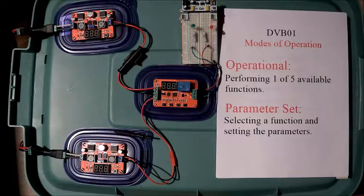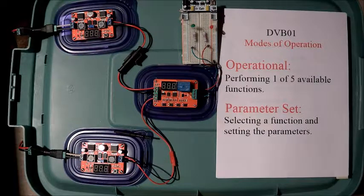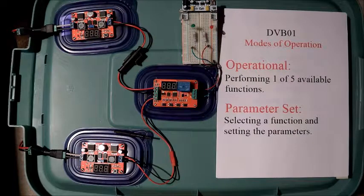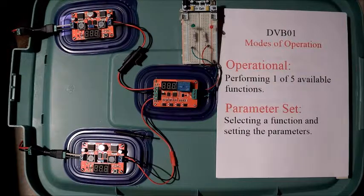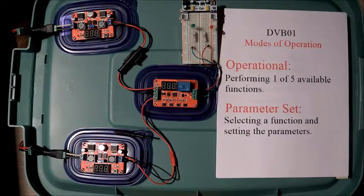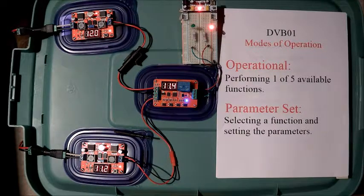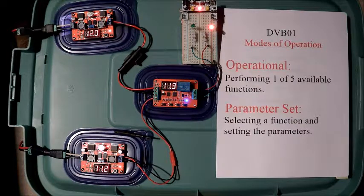The DVB-01, a multifunction voltage monitoring controller. The DVB-01 has two modes of operation. The first, operational mode. The second, parameter set mode. When you apply power to the DVB-01 module, it automatically goes into the operational mode.